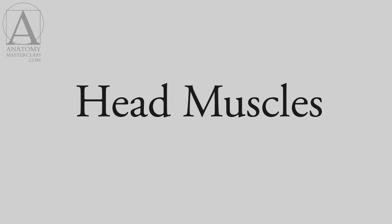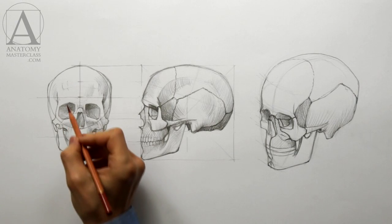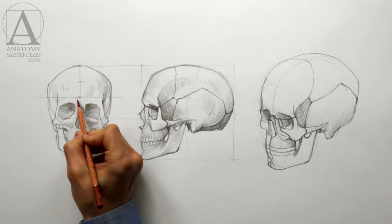Part 2: Head Muscles. This part of the video is dedicated to the muscles of the human head. The information in this video will help you to better understand how facial expressions are formed and what muscles influence the appearance of the face. There are more than 60 muscles in the human head, including some that begin in the neck.